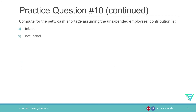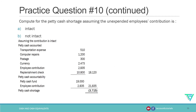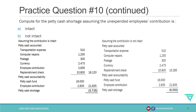Assuming the contribution is intact, the petty cash shortage is 3,715. If it's not intact, the petty cash shortage is 6,550.